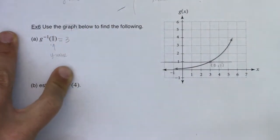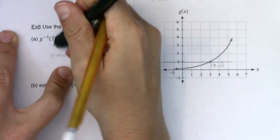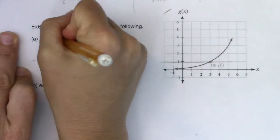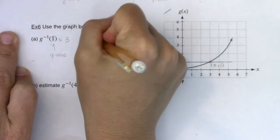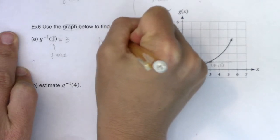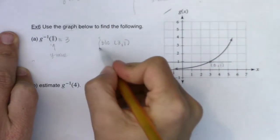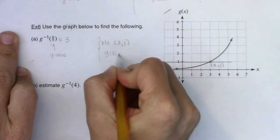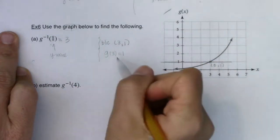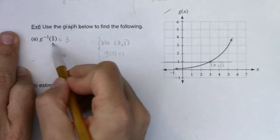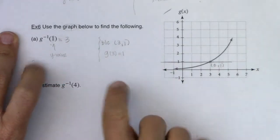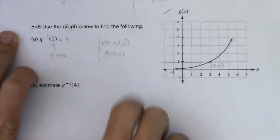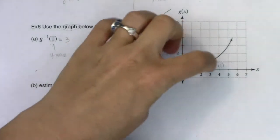That's because of the ordered pair 3 comma 1. You could have also said g of 3 was equal to 1. So you can write g of 3 equals 1, or g inverse of 1 equals 3. They both represent the ordered pair 3 comma 1, and you can find that on the graph.